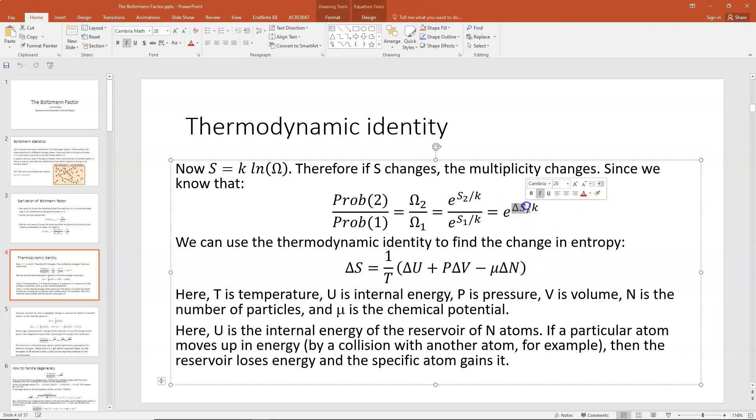Now, this is a delta S, a change in entropy, basically, if we're going from state 1 to state 2. We can use the thermodynamic identity to figure out what delta S would be. Remember that if we rearrange the thermodynamic identity and solve for delta S, we can get delta S = 1/T times (delta U + P delta V - mu delta N).